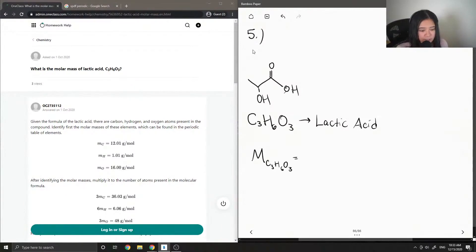And to calculate for the molar mass of lactic acid, it will just be three times the molar mass of carbon, since there are three atoms of carbon in lactic acid. We're going to add this to six times the molar mass of hydrogen, plus three times the molar mass of oxygen.